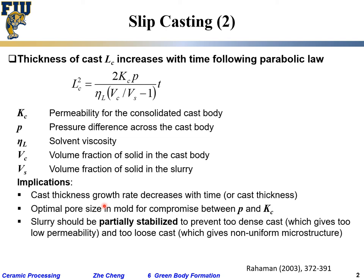The slurry should be only partially stabilized. If it is too stable, it gives a too-dense cast, which results in too low a permeability, preventing further drying and solvent removal. On the other hand, if the slurry is completely unstable, it packs too loosely — everything is loosely flocculated — giving too loose a green body. So again, it's a compromise: not too extreme.